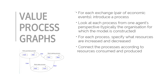We now turn to another application of the REA ontology: value process graphs. These are diagrams that take an internal perspective — that is, the perspective of a particular organization — and identify the major processes in that organization. For each process, the graph tells what economic resources it consumes and produces, and also shows how the processes are related.